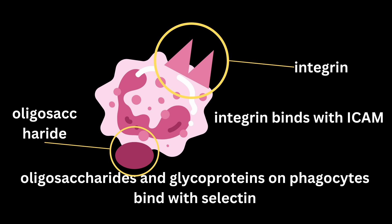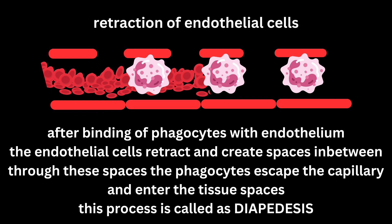There are also oligosaccharides — sugar molecules — and glycoproteins present on the leukocyte surface that bind to selectin. The next step in inflammation and escape of cells from the blood is the retraction of the endothelial cells. When there is injury, the pathogen enters the tissue spaces, blood flow increases, and leukocytosis occurs. The white blood cells in the blood then attach to the walls of the capillaries. After binding of phagocytes with the endothelium, the endothelial cells retract and create spaces between them.